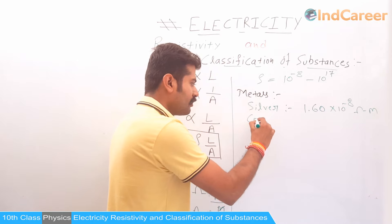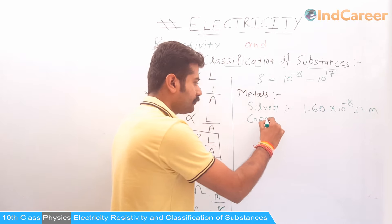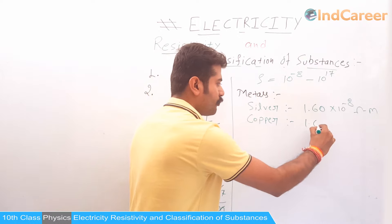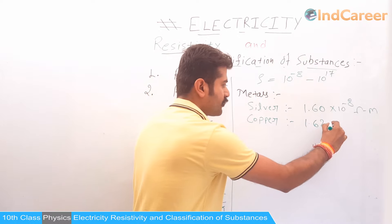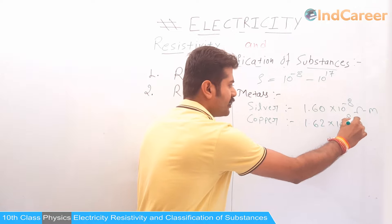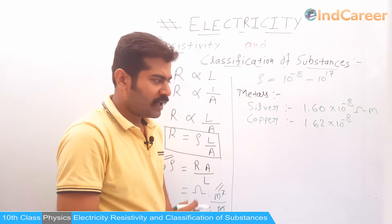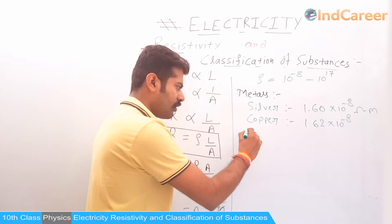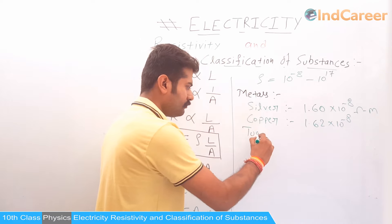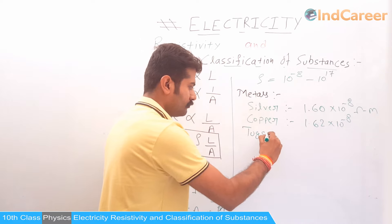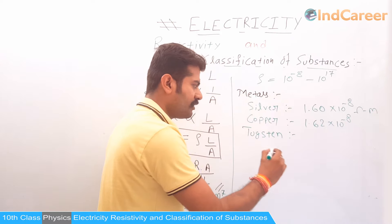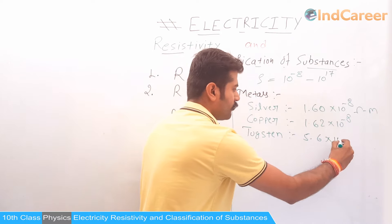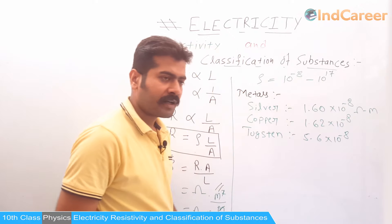The second example is copper, whose resistivity is also approximately 1.60 into 10 to the power minus 8 Ohm-metre. Another example is tungsten, whose resistivity is around 5.60 into 10 to the power minus 8 Ohm-metre.